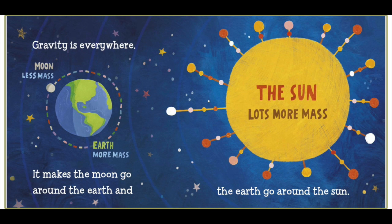...and the earth go around the Sun. Moon: less mass. Earth: more mass. The Sun: lots more mass.